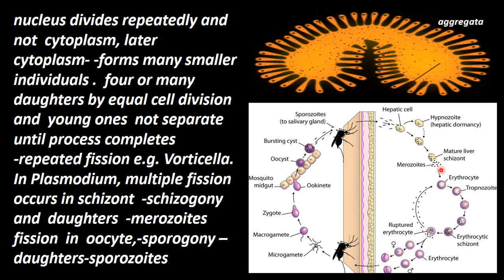These daughters are called merozoites. The merozoites enter into the red blood cells of the human host and rupture those red blood cells. From there, trophozoites come out. They form microgametes, which then fuse together to form a zygote. This is sexual reproduction.